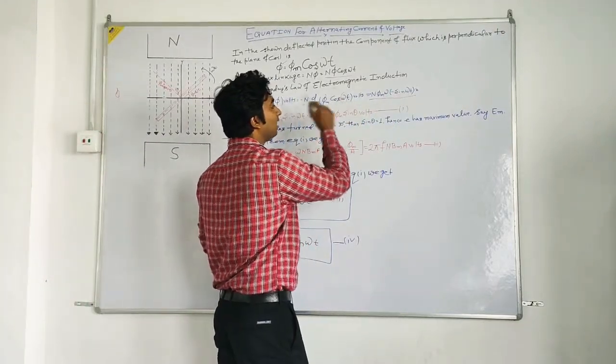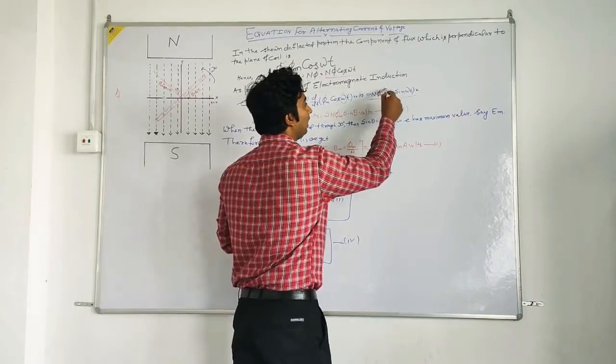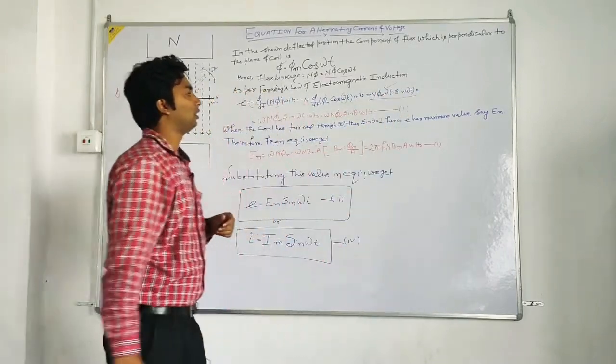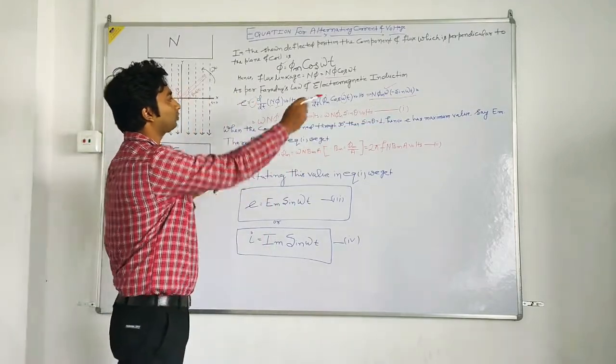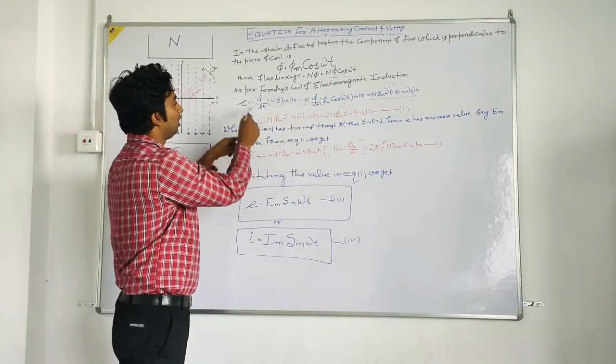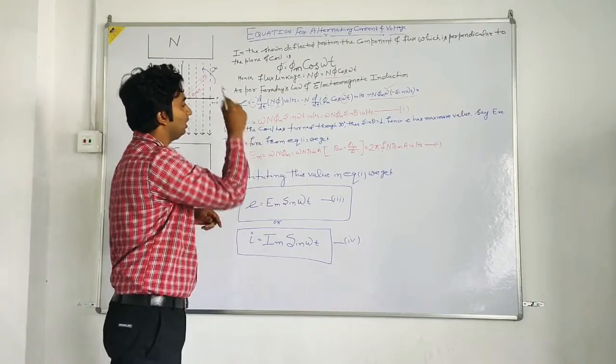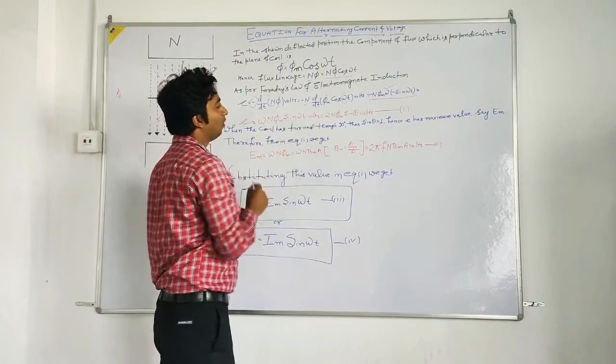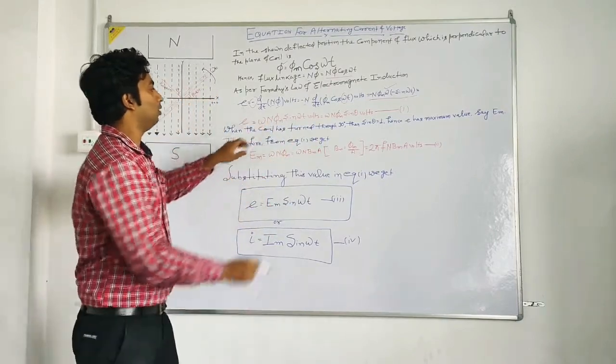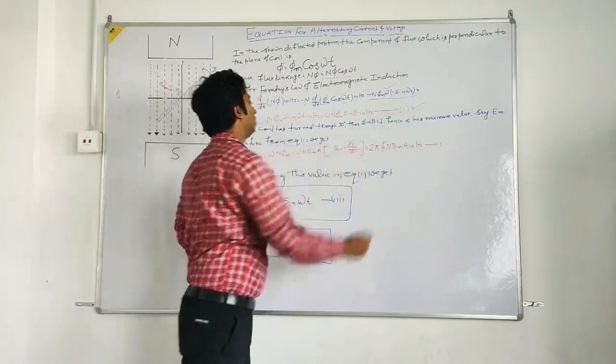So this is our equation. So from there we get e equal to omega n phi m sin omega t volts. So we name it as equation 1.